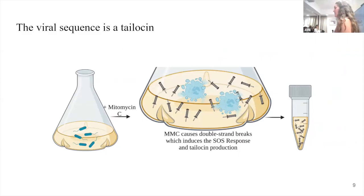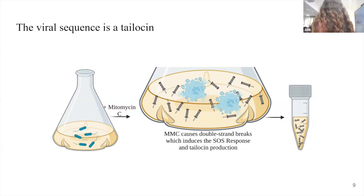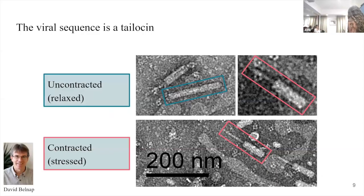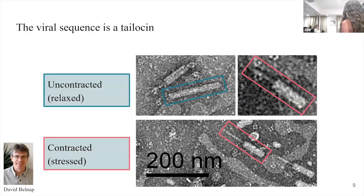We saw in the literature that you can induce talosins a lot like you can induce phages with mitomycin C. So I induced the talosins from a couple of my strains and did transmission electron microscopy, finding talosins both in their relaxed or elongated forms, or contracted and stressed forms. They kind of look like a contractile phage tail minus the phage head.